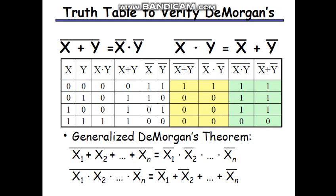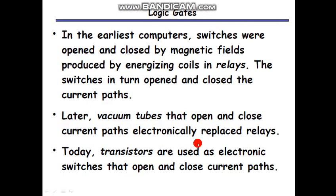Now for the generalized De Morgan's theorem: the variables may be any number — a, b, c or p, q, r, s — any n number of variables. The general form states that x1 plus x2 plus ... plus xn, whole bar, equals x1 bar into x2 bar into ... into xn bar.